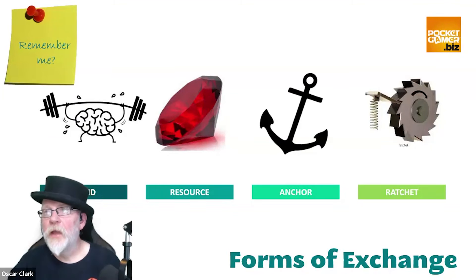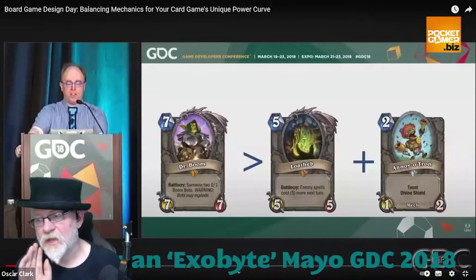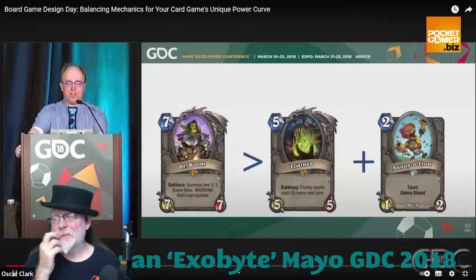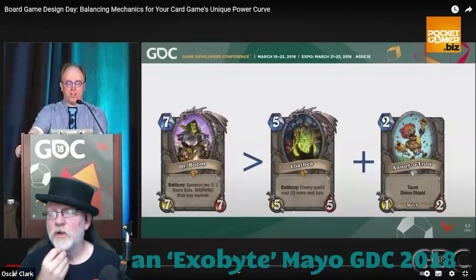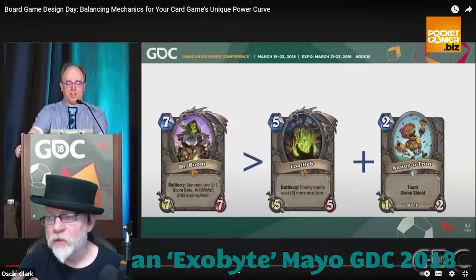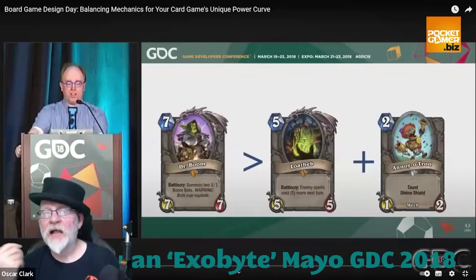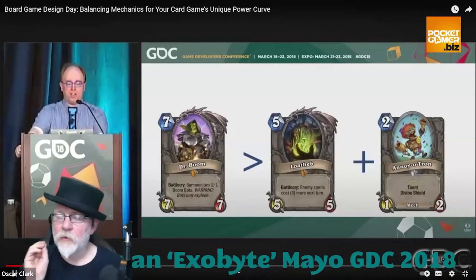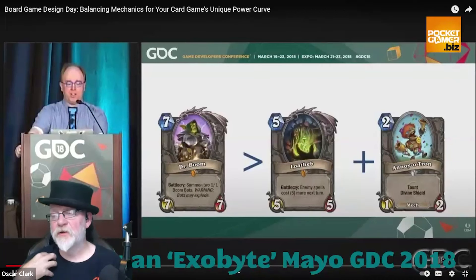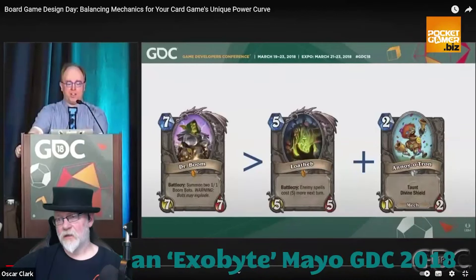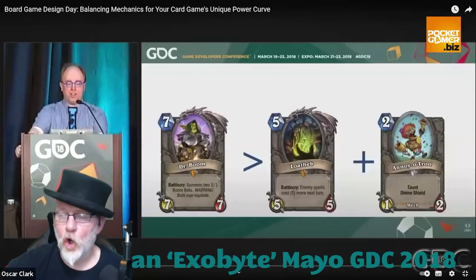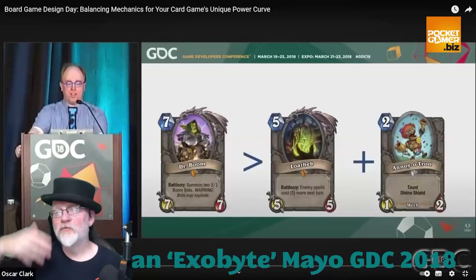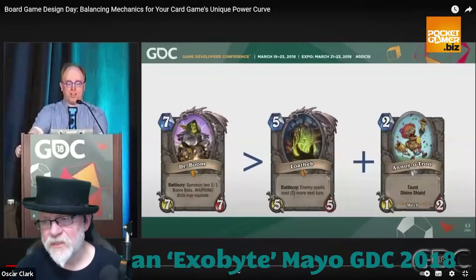I'm going to recommend a couple of GDC talks worth checking out. The first is by Dylan Mayo — designer at the Pokémon Company — who did a fantastic talk on card-based progression using Hearthstone as an example, showing how a level 7 card is more than the sum of its parts. If you haven't got experience with collectible card games or board games, you will struggle when thinking about video game economy systems — they're great shortcuts to help you apply rigorous logic to the playful process.